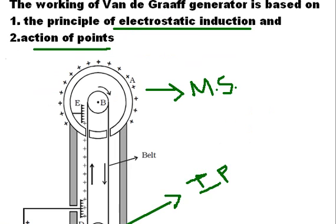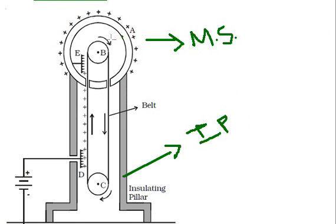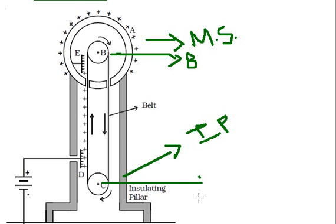There is a pulley B mounted at the center of the sphere and another pulley C mounted near the bottom — so there are two pulleys. A belt made of silk moves over these two pulleys. The pulley C is driven continuously by an electric motor, which causes the belt to move and the pulley B at the metallic sphere to rotate.